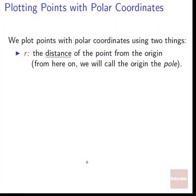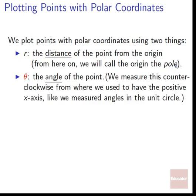We plot points with polar coordinates using two things: R, the distance of the point from the origin — how far we are from the origin. From here on, we're going to call the origin the pole. So the center of the graph will be called the pole. Next, we've got theta, the angle of the point. We measure this counterclockwise from where we used to have the positive x-axis, just like we measured angles in the unit circle.